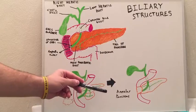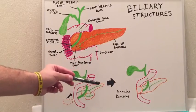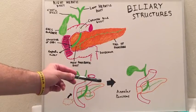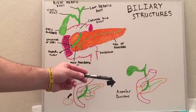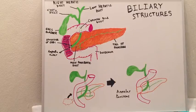Annular pancreas can lead to polyhydramnios, low birth weight, and feeding intolerance in children. These are the basics of the biliary structures.